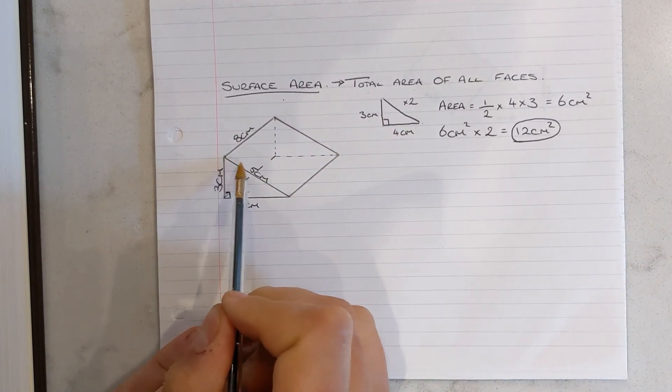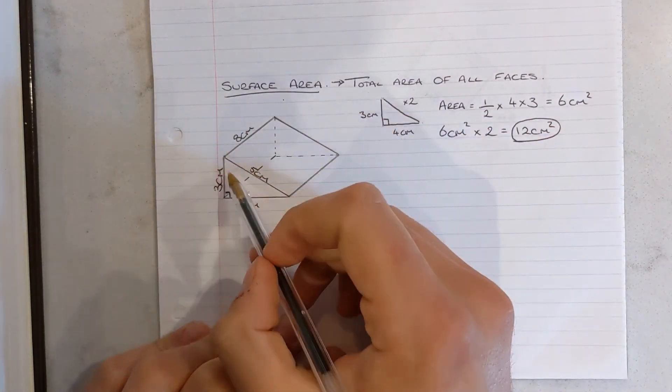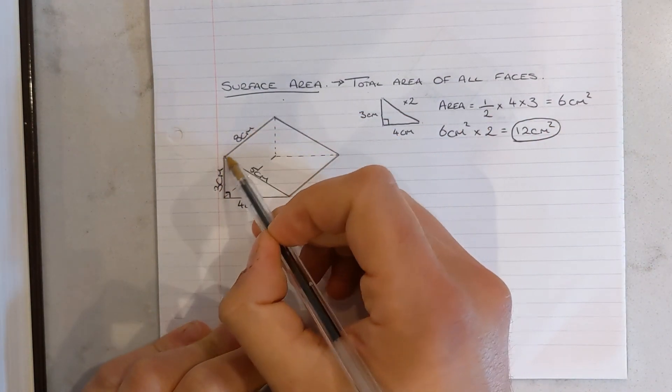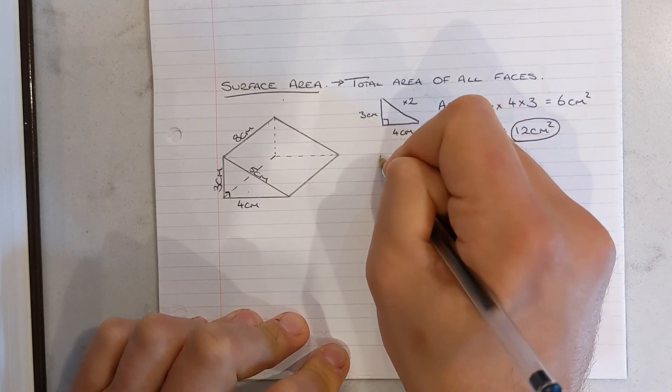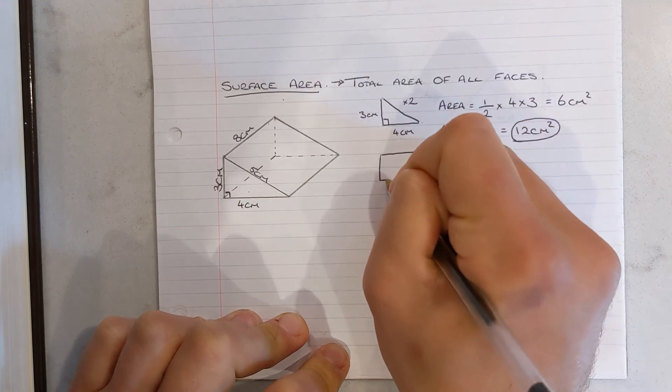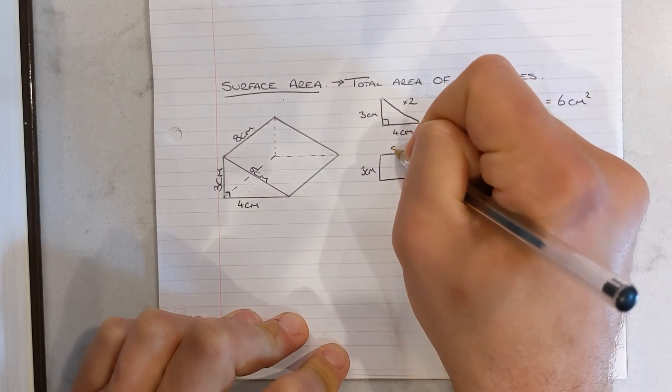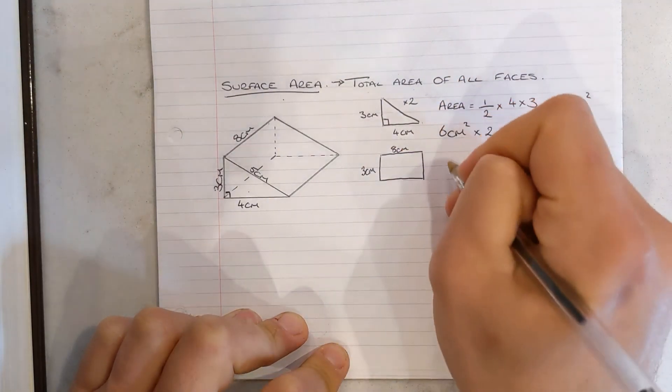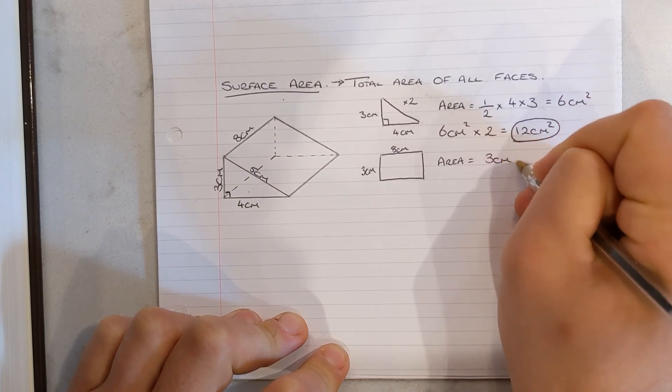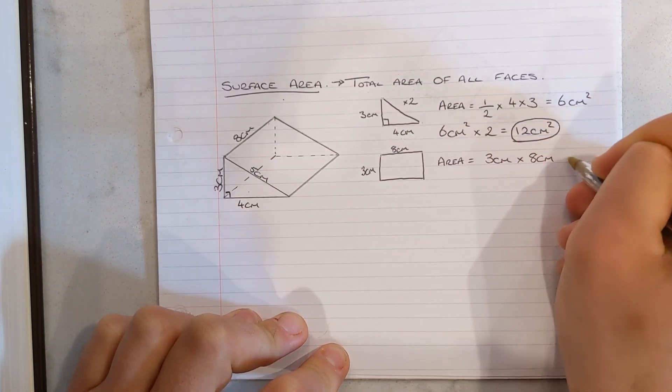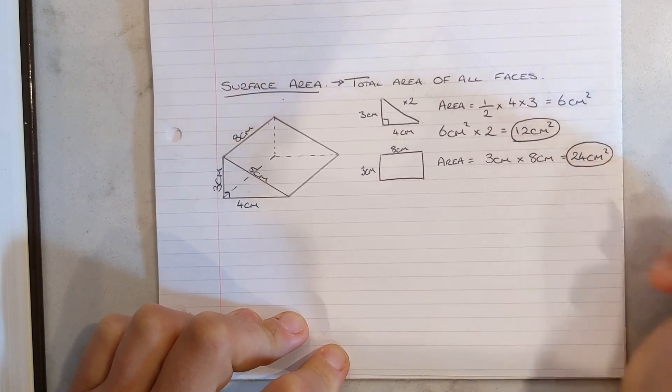I'm now going to work on this back rectangle here, this one at the side. I can see that it has a height or a width of three and a length of eight. So I'm going to draw a quick sketch of that. So it has a width of three and a length of eight. So it's three centimeters there, eight centimeters there. So now the area of this shape is equal to three centimeters times eight centimeters, which is 24 centimeters squared. And again, I'm going to circle that 24.